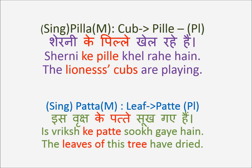Going on to further examples on masculine when it changes from singular to plural number: Sherni Ke Pillai Kheal Rahe Hai. Pilla is a cub; Sherni is a tigress or lioness. Had it been one cub, it would have been Sherni Ka Pilla, but here we are talking about plural, so Sherni Ke Pillai. Ka Pillai in singular turns to Ke Pillai in plural. Sherni Ke Pillai Kheal Rahe Hai — the lioness's cubs are playing.